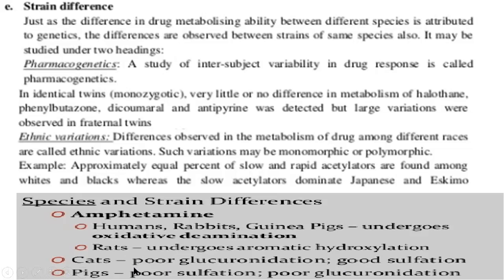In pigs, both sulfate conjugation and glucuronate conjugation are limited. So based on different species, there is variation in the metabolic pathway for the same drug, amphetamine — in humans, rabbits, and guinea pigs, oxidative deamination is the pathway, whereas in rats, it undergoes aromatic hydroxylation.